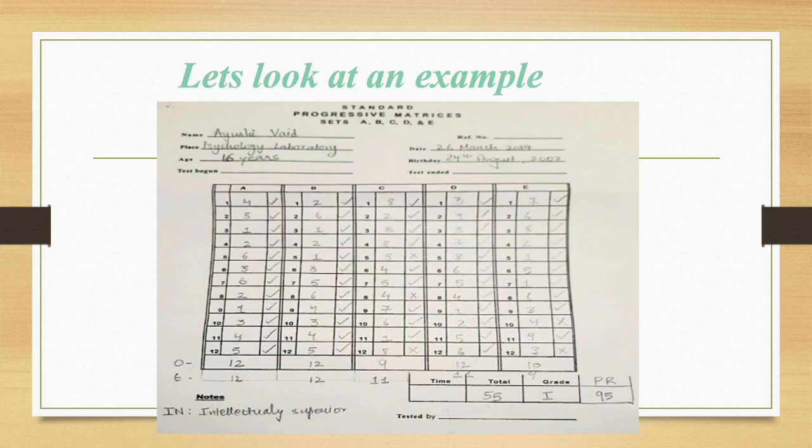Let us look at an example now. Here the subject has scored 12 in Set A, 12 in Set B, 9 in Set C, 12 in Set D. Overall, if you total this up, his total raw score is 55. We will find out the discrepancy now.